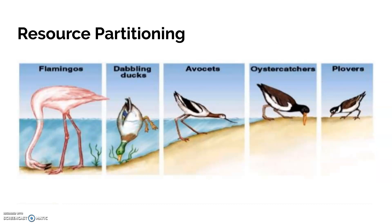Here is an example of resource partitioning where different species feed or drink water at different areas of a beach. This way they can all use the beach without getting in each other's way.